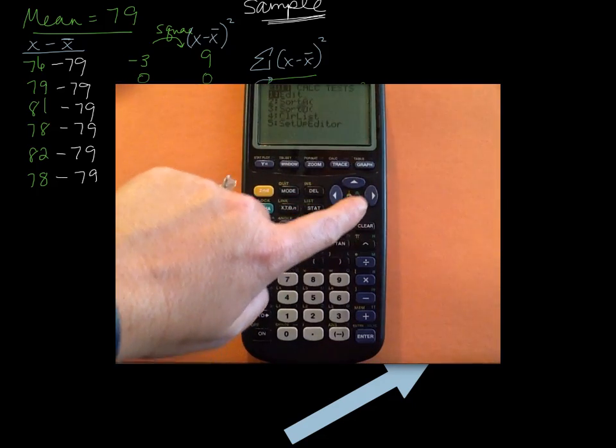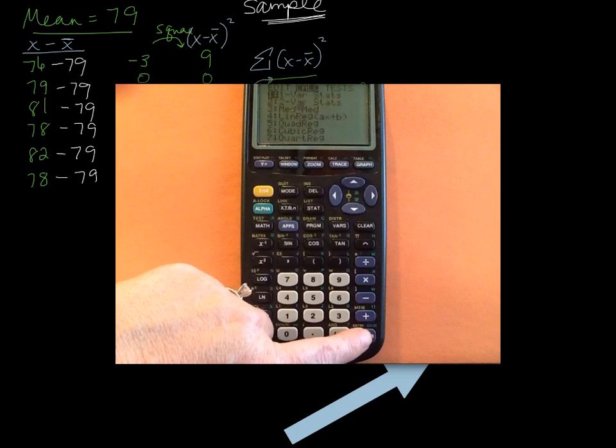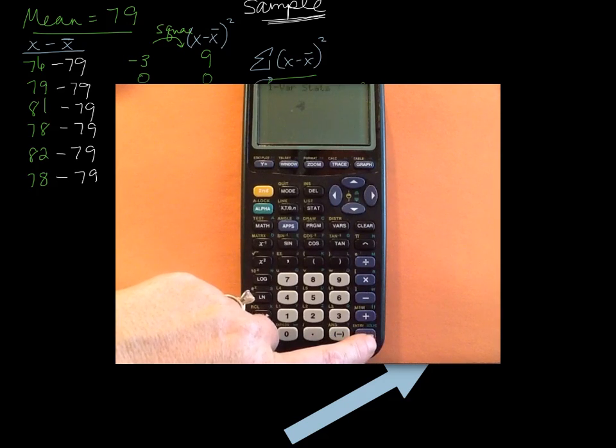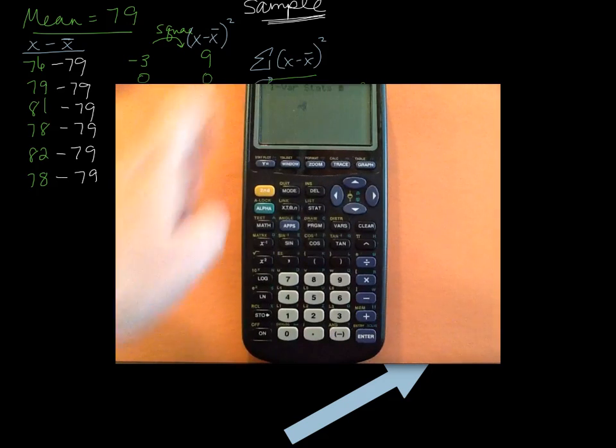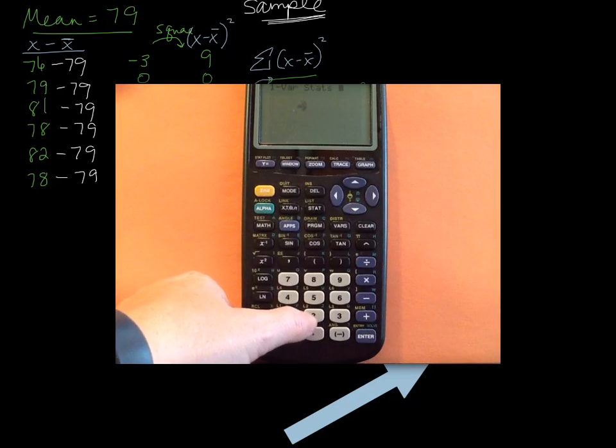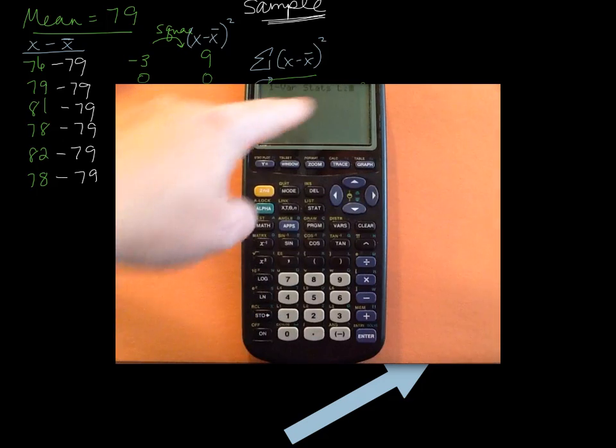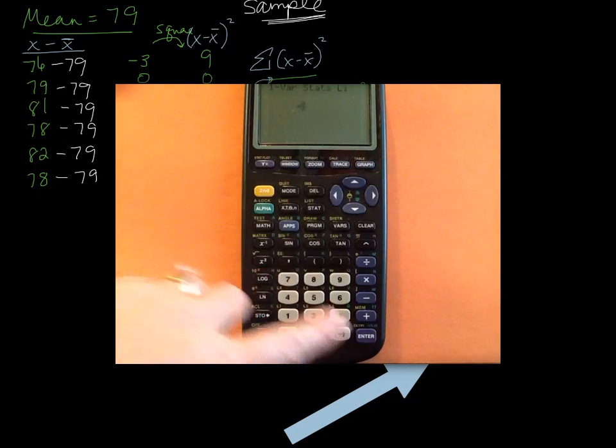Hit stat. Now that I know they're there, calculate. I'm doing one variable statistics, which is already highlighted, so I hit enter. My calculator wants to know where the numbers are. Coincidentally, they're in both lists, but I'm going to do list 2. So I'm going to do second 2 and make sure that it says L2. And hit enter.